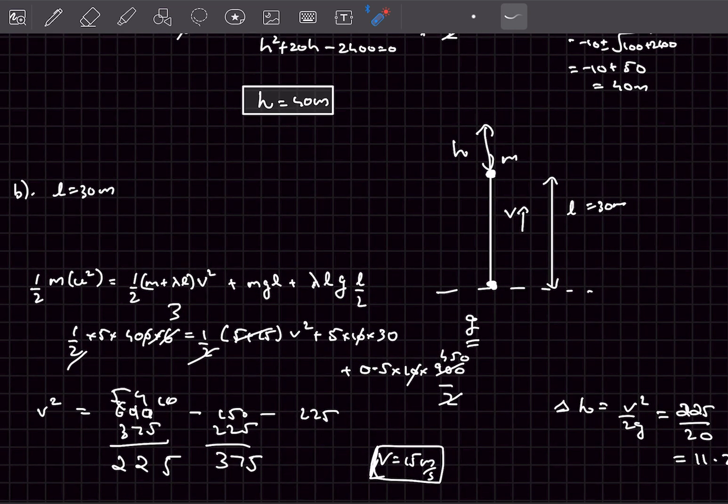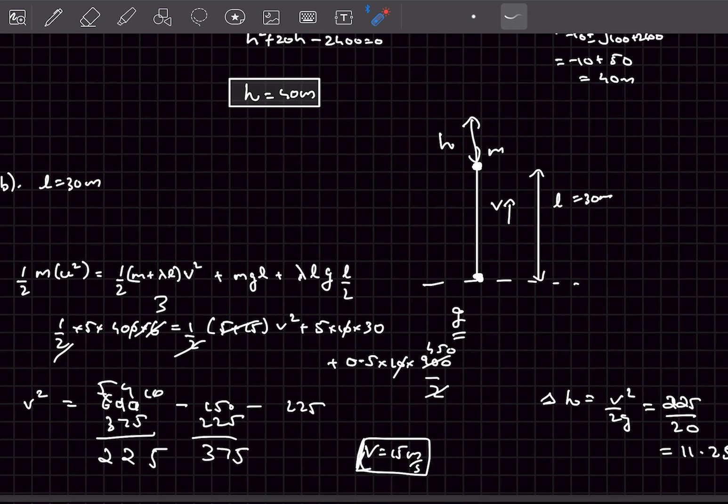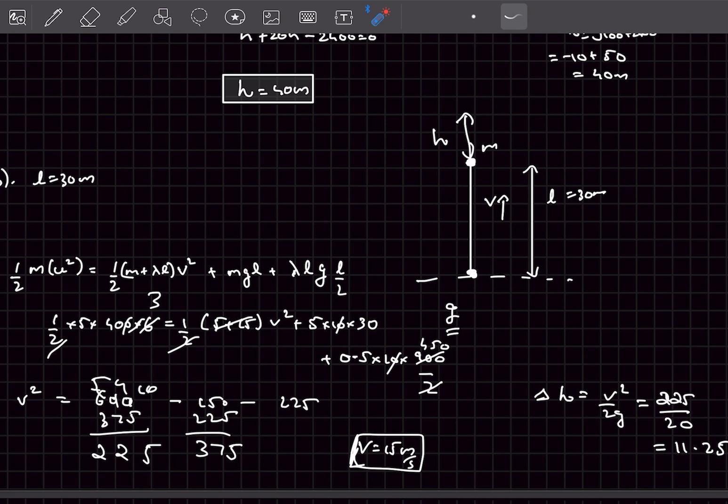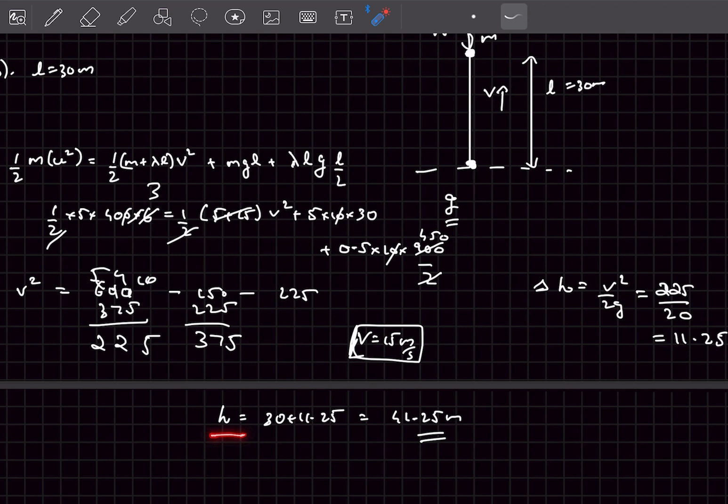If you solve this, you'll get the velocity of the system to be 15 meter per second. The extra height we can find using kinematics to be v squared by 2g because the deceleration is g. If you solve it, you'll get 11.25 meters, so after achieving 30 meters this ball will go an additional 11.25 meters and the final answer for the maximum height is 41.25 meters.